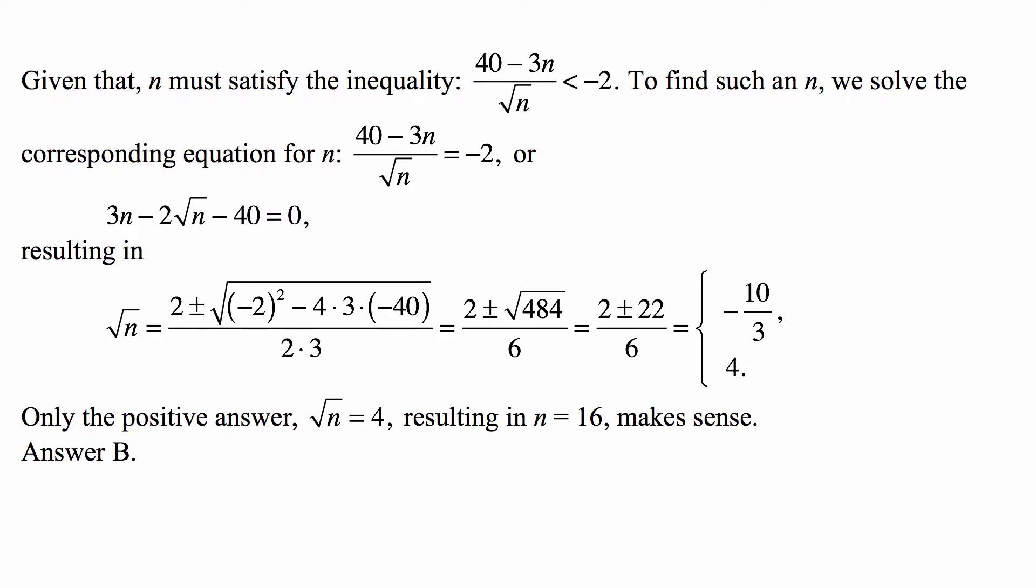This is a quadratic equation if you consider square root of n to be the unknown, and therefore √n must be equal to (2 ± √((-2)² - 4·3·(-40))) / (2·3), the whole thing divided by 2 times 3.